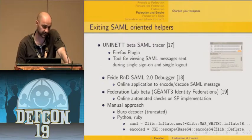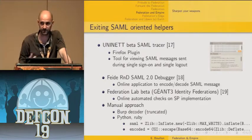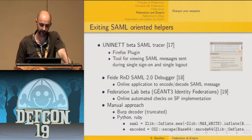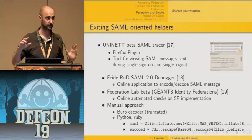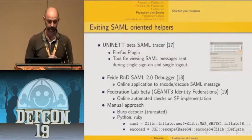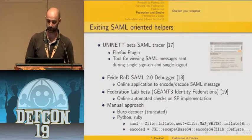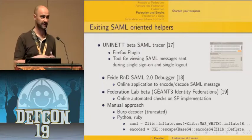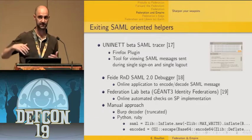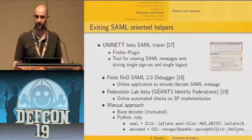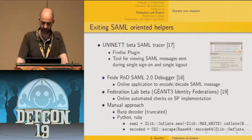Existing tools that can help: the UNINETT SAML tracer, a Firefox plugin that shows you decoded SAML tokens your browser is receiving and sending; the Fiddler SAML debugger, an online application where you submit a token encoded or decoded and receive the corresponding output; and a very interesting one from Day One Identity Federation's Federation Lab — an online automated compliance check of service provider implementations. You trust their federated STS, start a scan, and get results showing how compliant your implementation is with the standard.